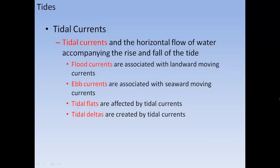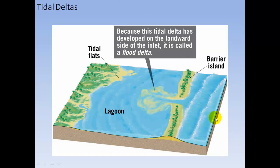Tidal currents are the horizontal flow of water accompanying the rise and fall of the tide. Flood currents are associated with landward-moving water, and ebb currents are associated with seaward-moving water. Tidal flats are affected by tidal currents, and tidal deltas are created by tidal currents — material deposited by flood currents as high tide comes in and water pulls back during ebb.